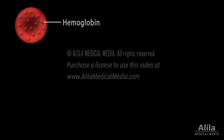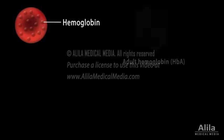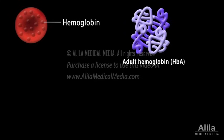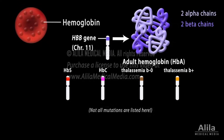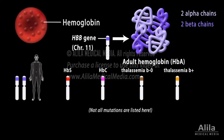Hemoglobin is the major component of red blood cells and is responsible for oxygen transport. The adult hemoglobin, or hemoglobin A, is composed of 4 protein chains — 2 alpha and 2 beta. The beta subunit is encoded by the HBB gene. Several mutations in the HBB gene are responsible for the disease. Each individual has 2 copies of the HBB gene.